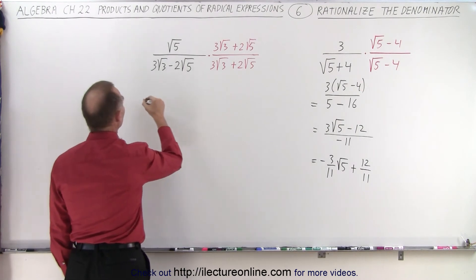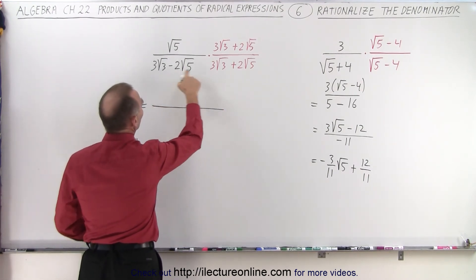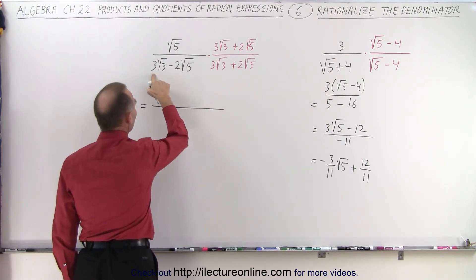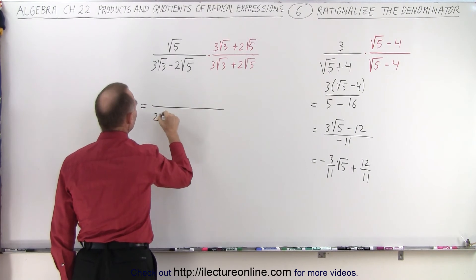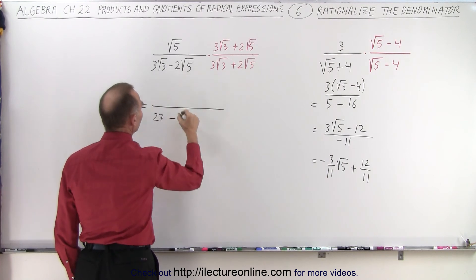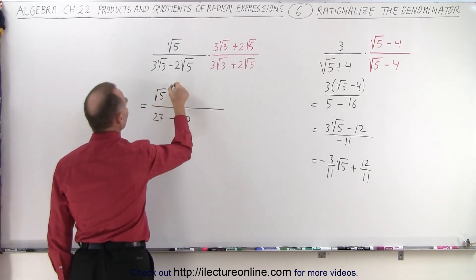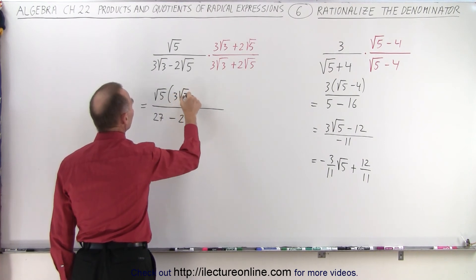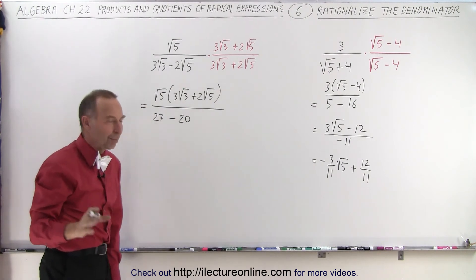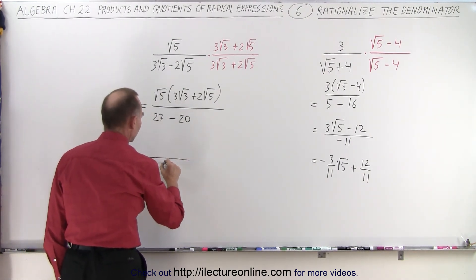We do the same over here. First we'll take a look at the denominator. Since we have to multiply this by its conjugate, we take the first term squared, which is 9 times 3, which is 27, minus the last term squared, which is 4 times 5, which is 20. In the numerator, we end up with the square root of 5 times 3 times the square root of 3 plus 2 times the square root of 5. So in the denominator, we have 27 minus 20, which is 7.